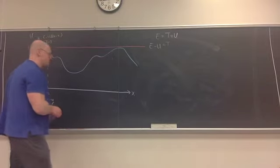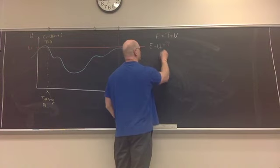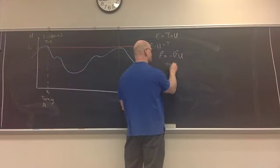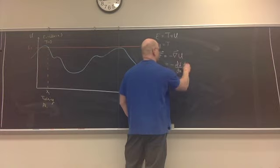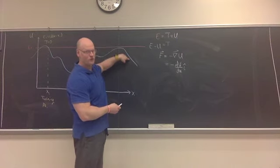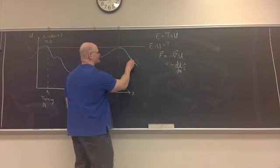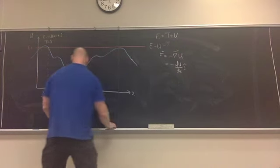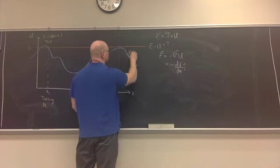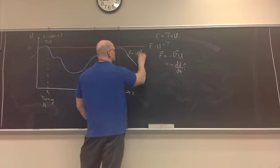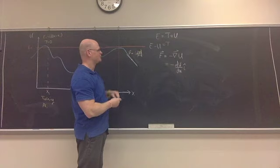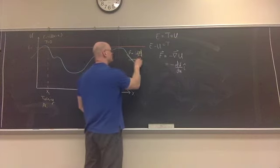Not only that, but we also know that force is related to the potential energy by minus its gradient, or in this one-dimensional sense, F equals minus dU/dx. So we can determine the force acting on the particle at any given position — it's simply equal to the slope of the tangent line, but pointing in the opposite direction. Since we have a negative slope at this position, the force would be pointing to the right.